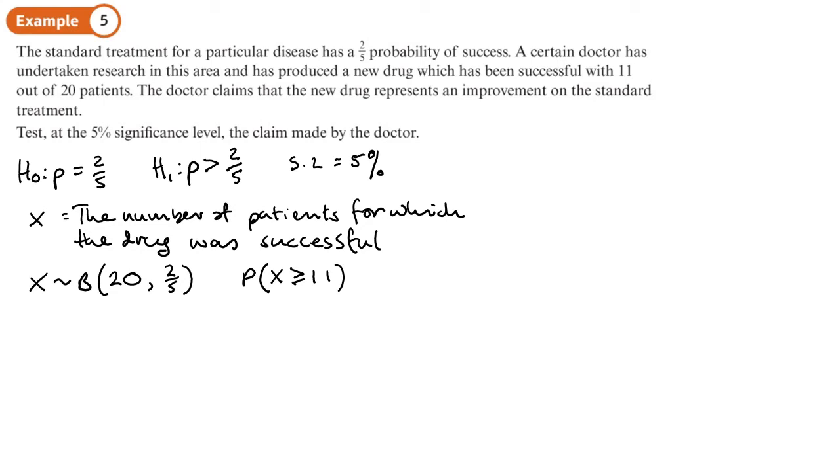Is that a high probability or a low probability? The way we're going to work that out is we are going to use our calculators and compare that to the significance level. Now we can't work that out directly on our calculators or even use the tables, so we'll do 1 minus the probability that X is less than or equal to 10.